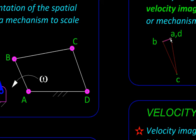So if we have these velocities read relative to the velocity image of a fixed point, like this point A or D, then those are the absolute velocities.